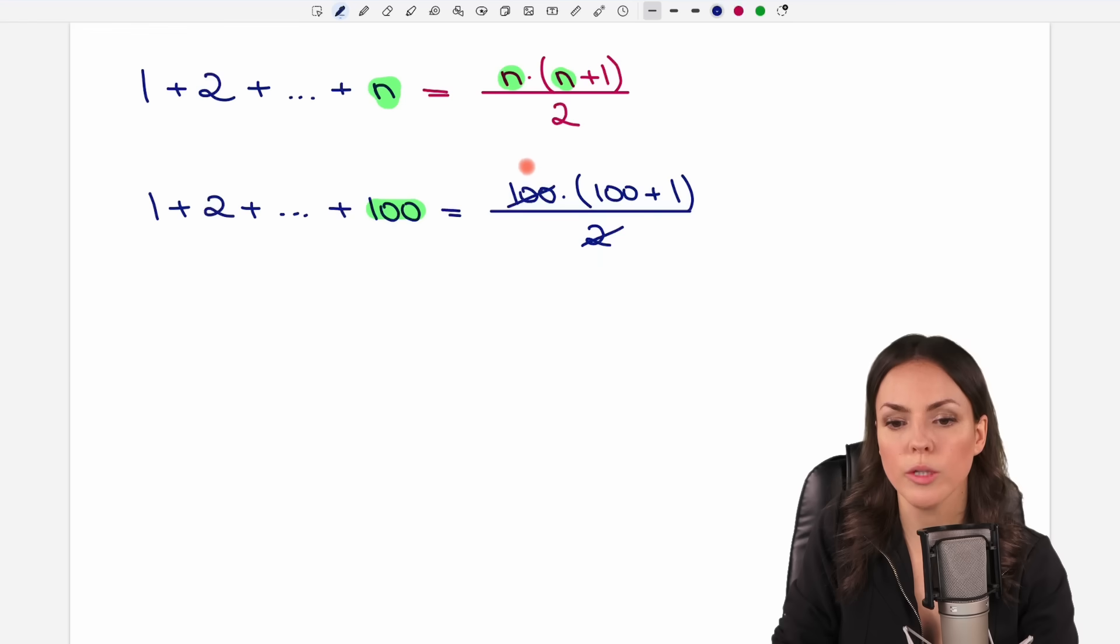So we have 50 times 101. Oh, what a surprise! This is exactly what we had. And we already know that this is 5050. And of course, his formula worked here as well.